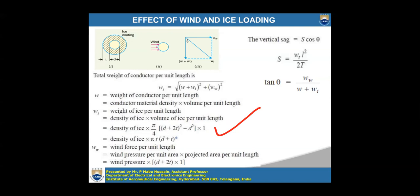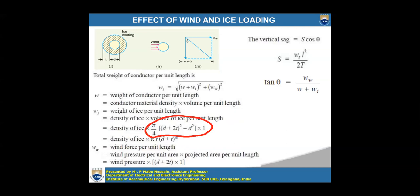From the first formula, you will get the second formula: density of ice × π(d + 3t) by expanding the expression. Wind force per unit length of the conductor is also not always given directly — sometimes wind pressure per unit area and projected area per unit length are given, so you multiply those two. When diameter and thickness are given, wind pressure per unit length = wind pressure × (d + 2t) × 1. You have to remember all these formulas.